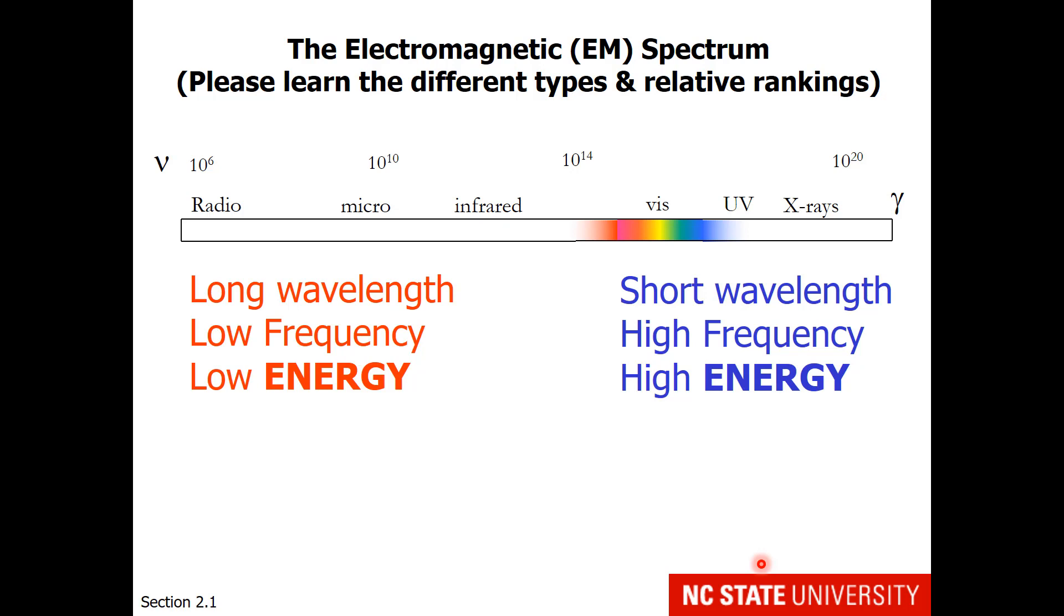So now hopefully you understand the diagram that I was showing you initially, where radio waves have low energy, long wavelength, and also low frequency. And gamma rays, which are quite dangerous, have high energy, high frequency, and a short wavelength.